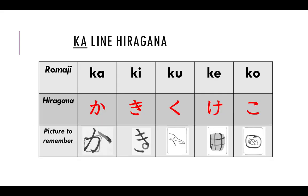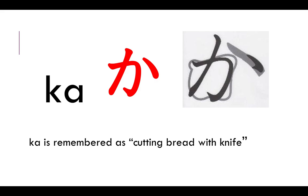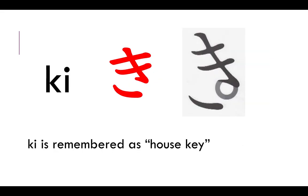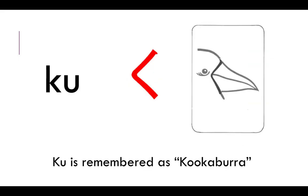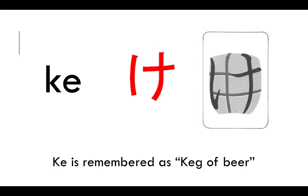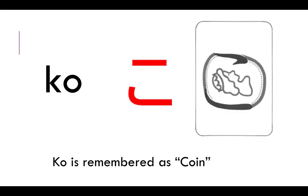Coming back to hiragana, we have the ka line, which is the second row of hiragana, starting from ka, ki, ku, ke, and ko. Ka, ki, ku, ke, ko.